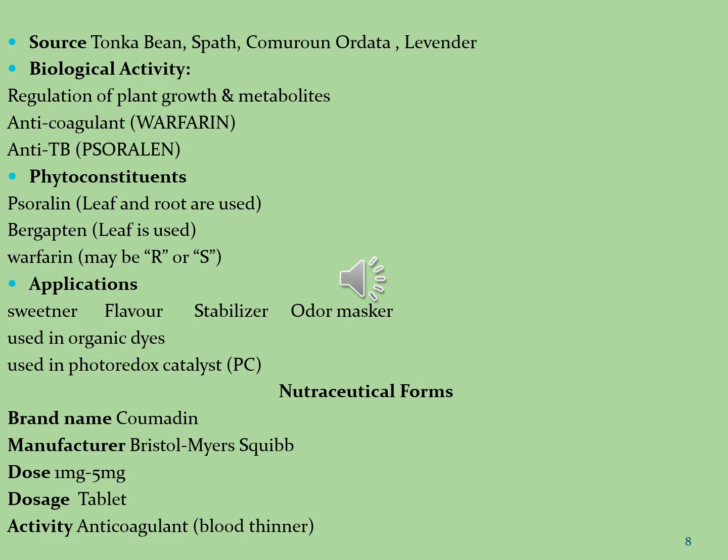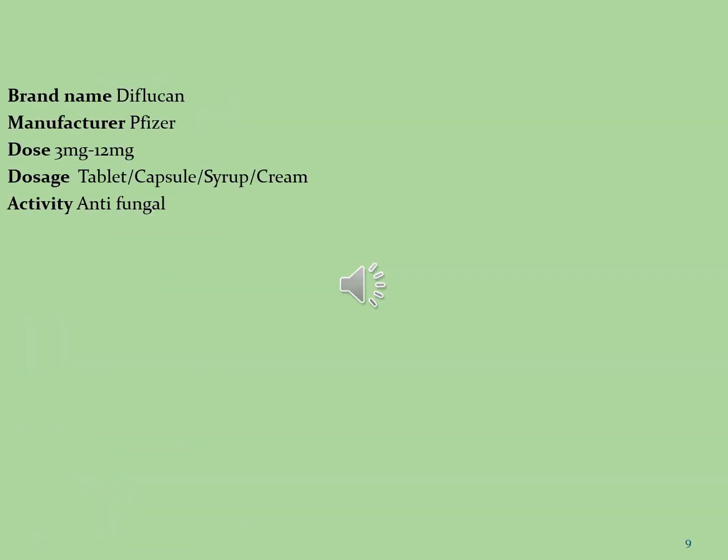Coumarins are used in formulation of different pharmaceutical dosage forms. The first brand is Coumadin, manufactured by Bristol-Myers Squibb, dose 1 mg to 5 mg per day, formulated as tablets with anti-coagulant (blood thinner) activity. The second brand is Diflucan, manufactured by Pfizer, dose 3 mg to 12 mg per day, formulated in tablet, capsule, syrup and cream dosage forms, used as an antifungal agent.